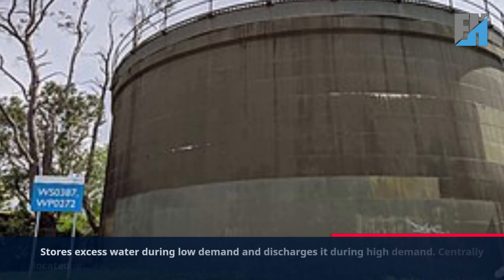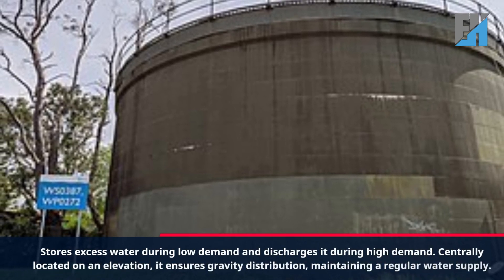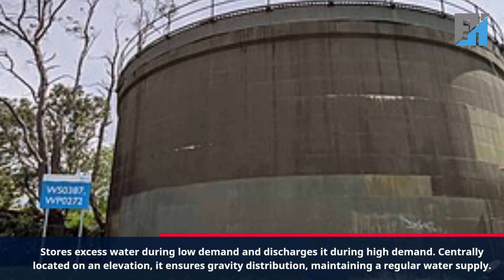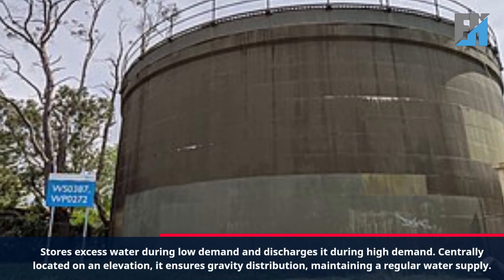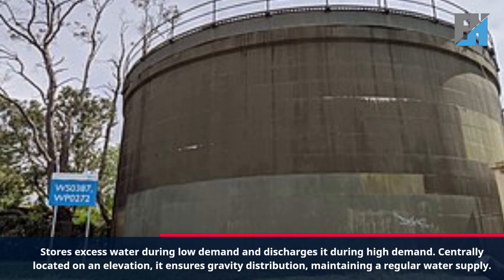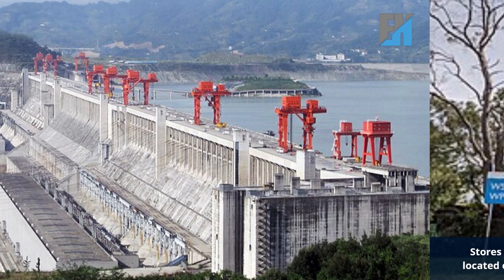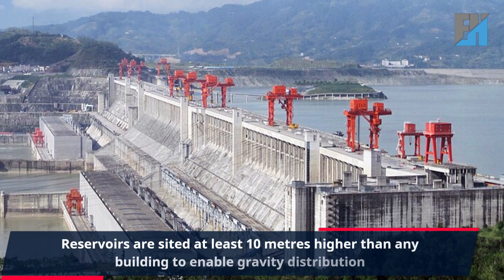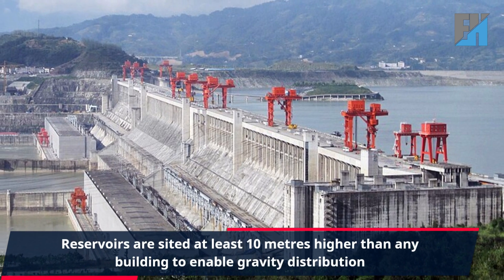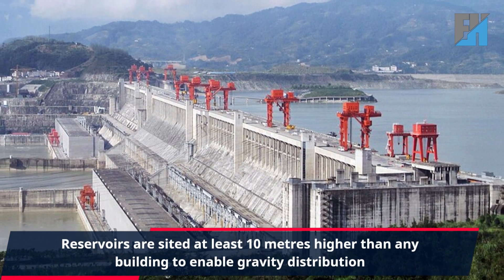The distribution reservoir stores excess water during low demand and discharges it during high demand. Centrally located on an elevation, it ensures gravity distribution and maintains a regular water supply. Reservoirs are sited at least 10 meters higher than any building to enable gravity distribution.